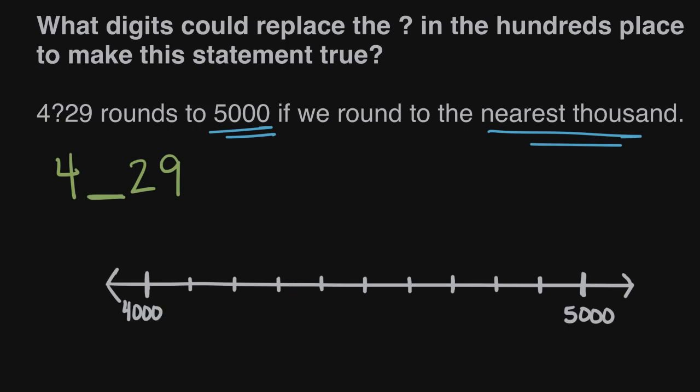So let's look back now at our number and try to fill in some digits and see where they land on this number line. Let's fill in the first possible digit we could fill in here as a zero. So this would be 4,029.